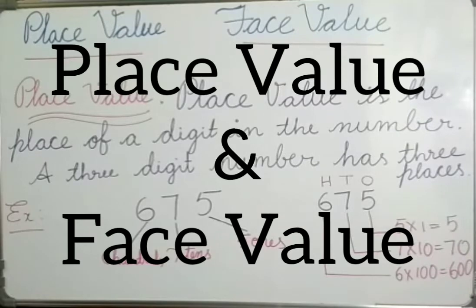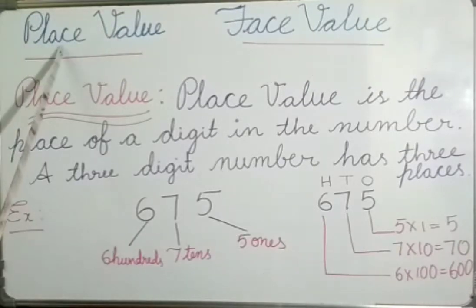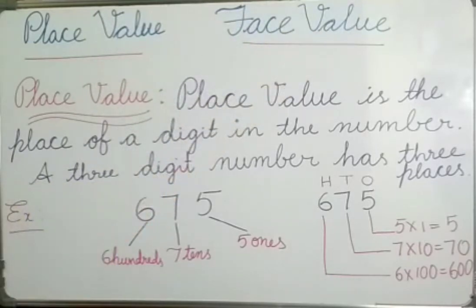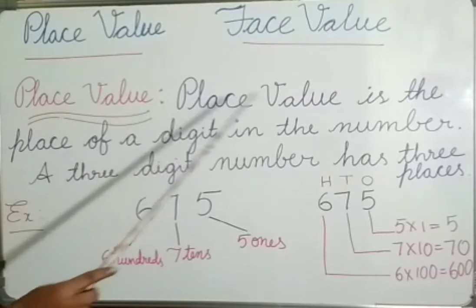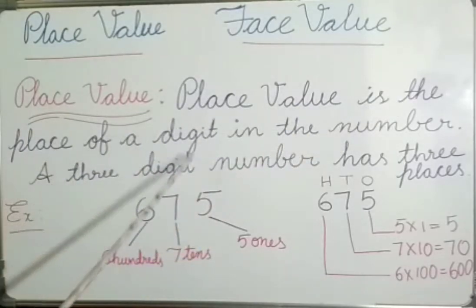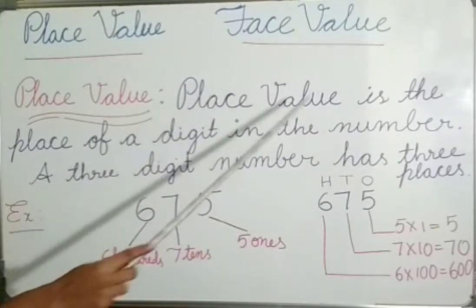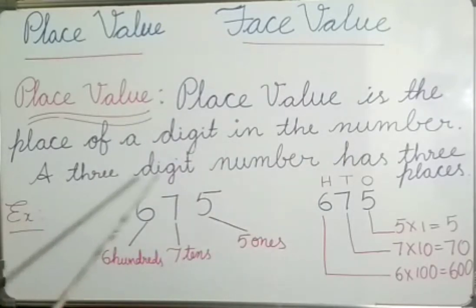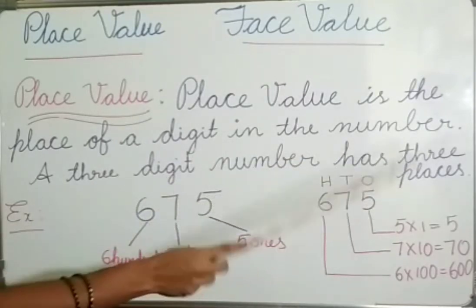Hello children, today we are going to discuss about place value and face value. Now let us learn about place value. Place value is the place of a digit in the number. A 3-digit number has 3 places.